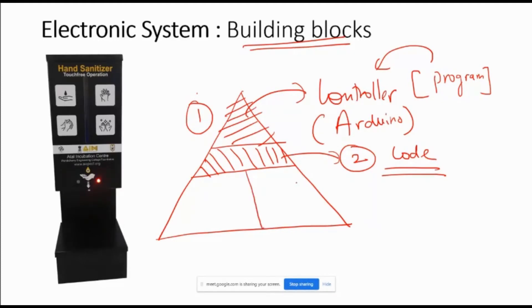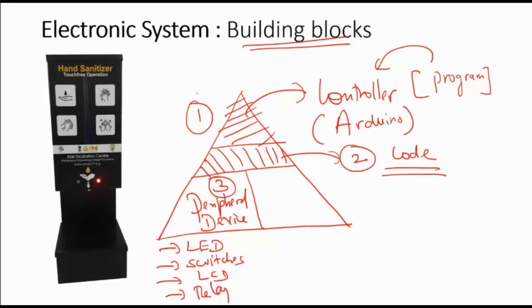The third important part is the peripheral device. What are the various peripheral devices? We have LEDs, we have switches, we have LCD displays, we have relays, we have motors. All these peripheral devices can act as either input device or output device. And they are used for designing a system.